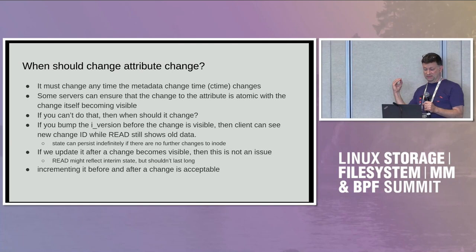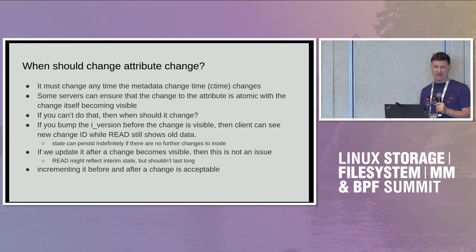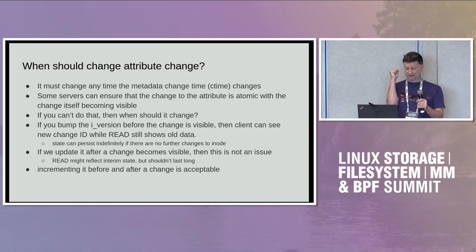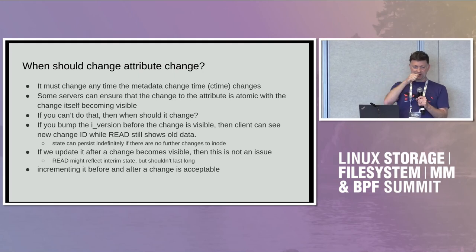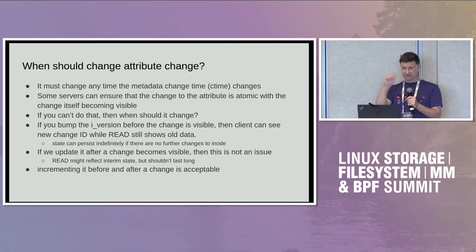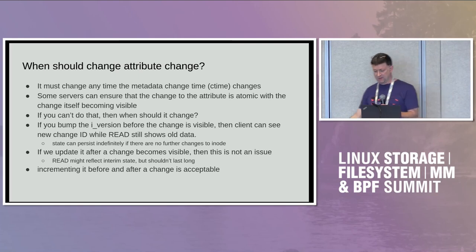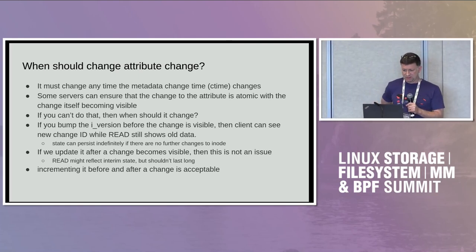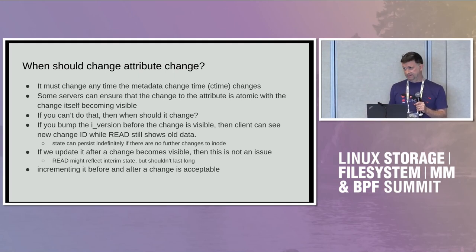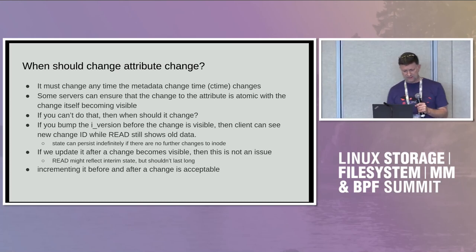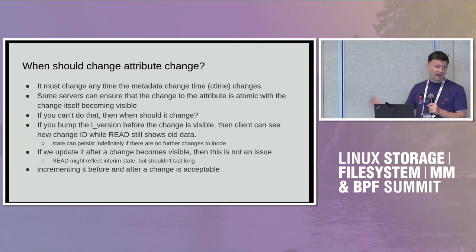Right now Linux bumps it before the change is visible, and that's bad because someone can race in with a getattr, see the new iVersion value, and then do a read before you have a chance to copy anything to the page cache. Now the client has associated the new iVersion value with an old state of the cache. If we do it after the change becomes visible, it's still a little racy, but the client should catch up quickly. Incrementing before and after is also acceptable.